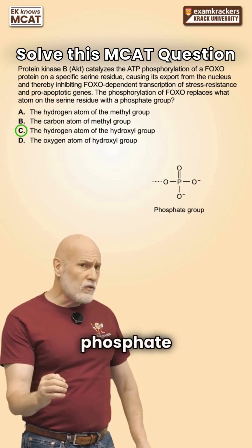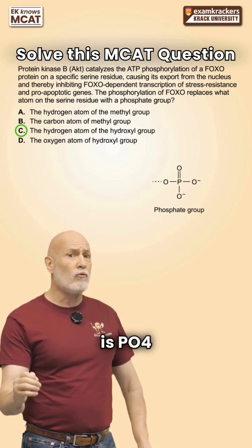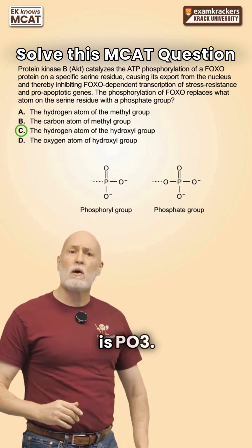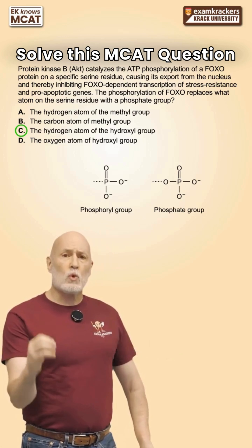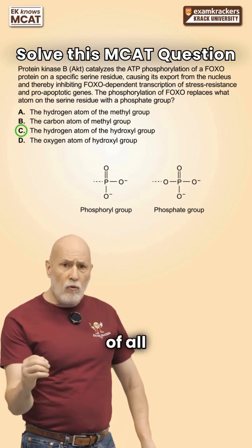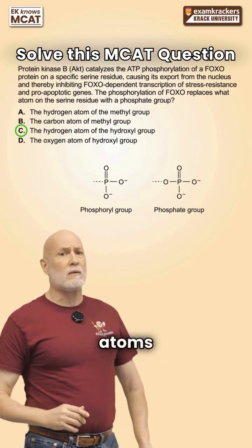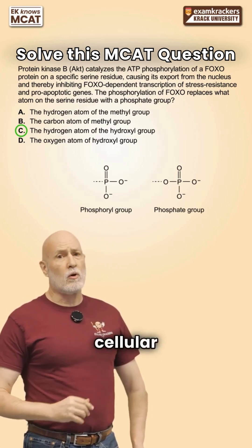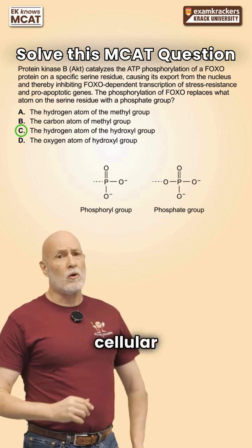A phosphate group is PO4, while a phosphoryl group is PO3. The transfer of all four oxygen atoms of a phosphate group does not take place in cellular metabolism.